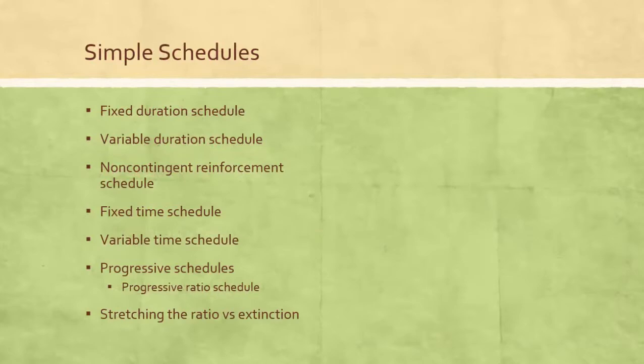Some of you may be lucky enough to have jobs that use non-contingent reinforcement schedules. In a fixed time schedule, you're rewarded after a certain period of time, regardless of what behavior you show during that time. Can you guess what variable time schedules are? Of course, they involve reinforcement after a varying period of time, regardless of what behavior is shown.